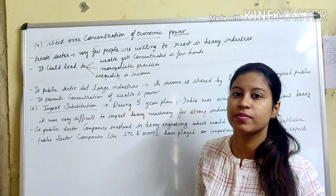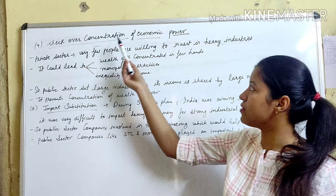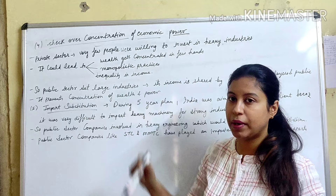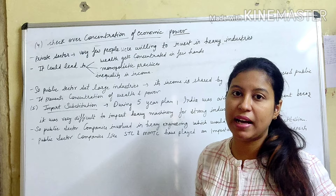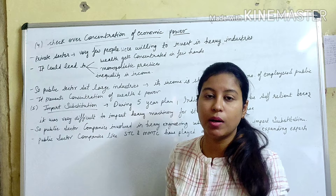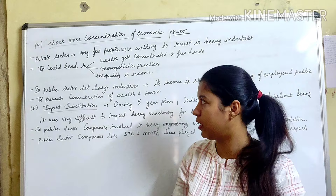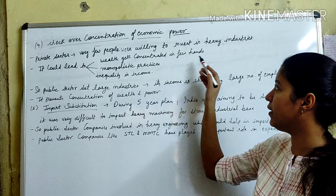The next point is checking over-concentration of economic power. In the private sector, very few people were willing to invest in heavy industries. This meant wealth became concentrated in a few hands, leading to monopolistic practices.